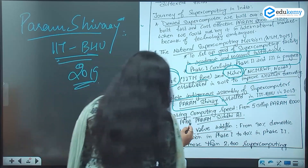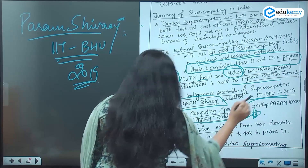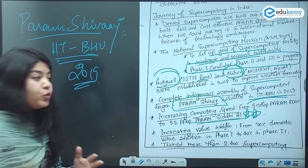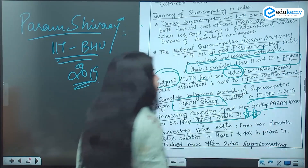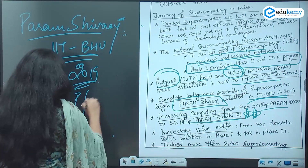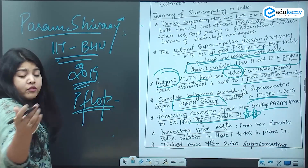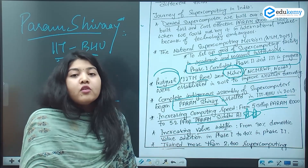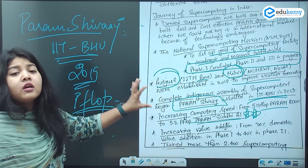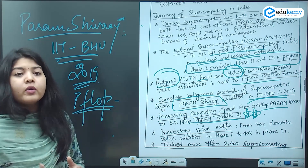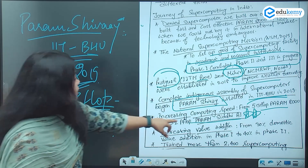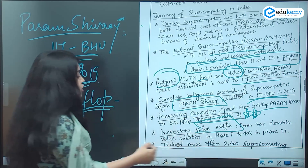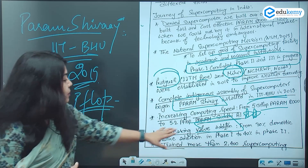Coming to the next, which is Param Siddhi — very important, this is the reason we are taking up this question because it has been in the news. In Param Siddhi, the computing speed has been increased to 50 petaflops. For increasing value addition: 30% domestic value addition in phase one and 40% in phase two. More than 2,400 workforce has been trained in supercomputing.